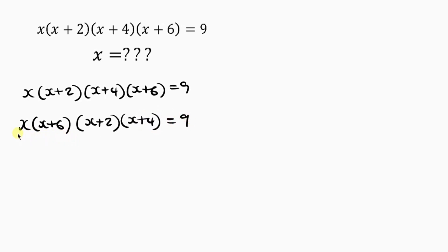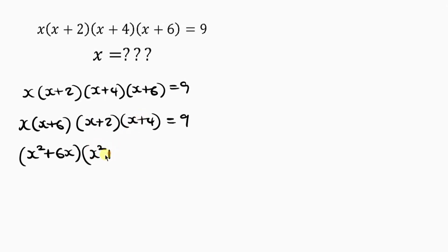Now we're going to be expanding both brackets. s times s is s squared, plus s times 6 gives us 6s. For the second bracket: s times s gives s squared, plus s times 4 gives 4s, then plus 2 times s gives 2s, then plus 2 times 4 gives 8. Close the bracket, equal to 9.